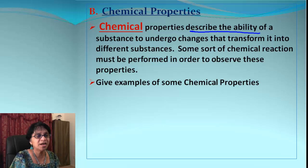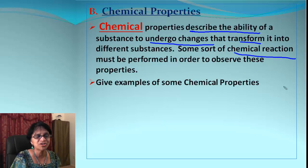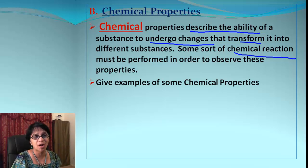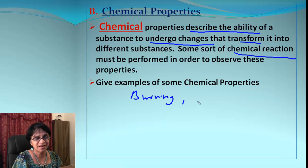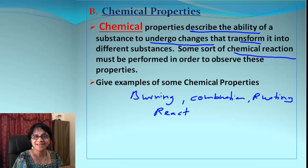Chemical properties are a whole different story. Chemical properties describe the ability of a substance to undergo changes that will transform it into totally new, different substances. There will always be a chemical reaction taking place for a chemical change. Examples of chemical properties include burning or flammability, combustion, rusting, and the ability to react.